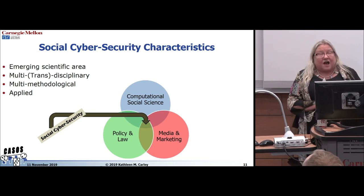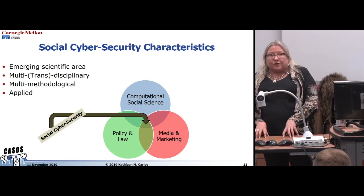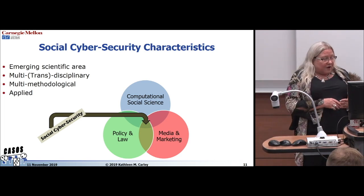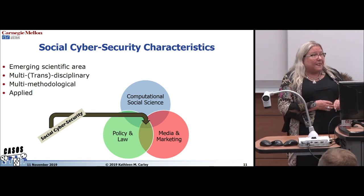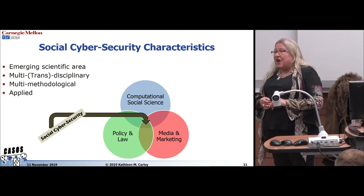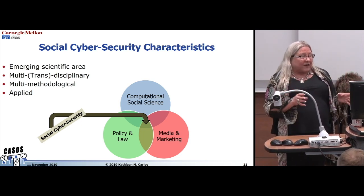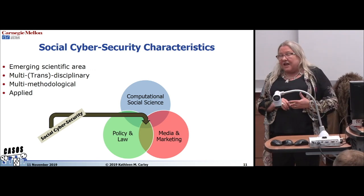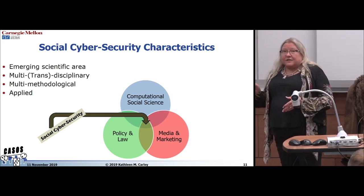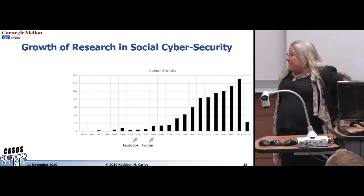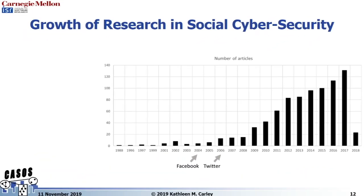As a science, social cybersecurity is a computational social science, meaning it involves computer science applied to social problems and social science done with computational techniques. It's also related to media, marketing, policy, and law. Most of the research is inventing new theories, because traditional theories from psychology, economics, or anthropology are not working in a cyber media environment at scale. It's a multi-disciplinary, multi-methodological area that has just exploded in terms of the number of papers and is continuing to grow.